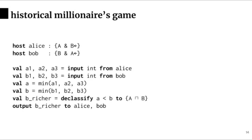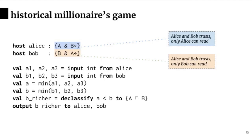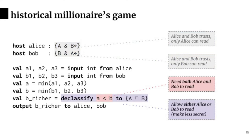Let's go back to the security labels in the historical millionaire's game. Looking at the host declarations, we can see that host Alice has label A and B integrity, which means that Alice and Bob trust Alice not to cheat, and Alice can read her own private data. Host Bob has label B and A integrity, which means that Alice and Bob trust Bob not to cheat, and Bob can read his own private data. Looking at the program itself, we see that the result of comparing Alice and Bob's minimum net worths is wrapped in a declassified expression. This is because the comparison is over both of Alice and Bob's private data, and thus neither of them can read it individually. The declassified expression explicitly allows Alice and Bob to individually see the result of the computation, allowing the program to output the result to both Alice and Bob.